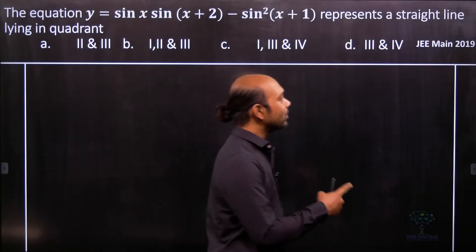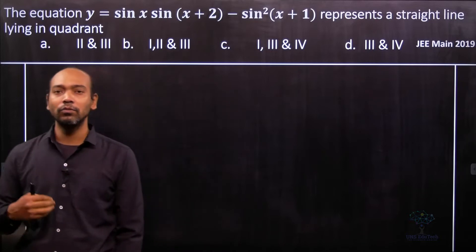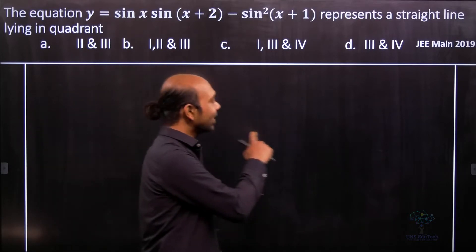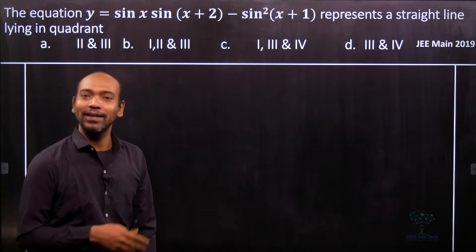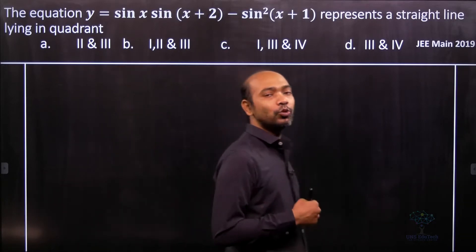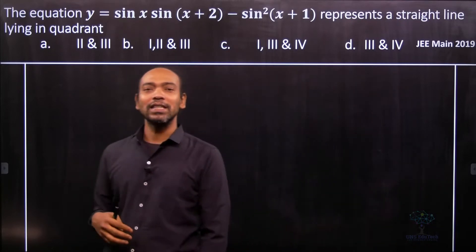This problem is from JEE Main 2019 where we need to find out in which quadrant the given expression y = sin x sin(x + 2) - sin²(x + 1) lies. It represents a straight line, but based on sine functions we cannot directly calculate the quadrant, so the easiest way is to simplify the expression.